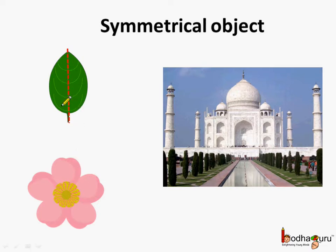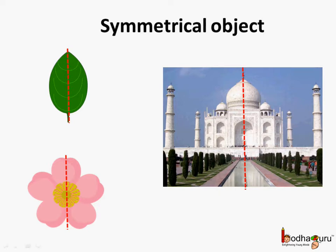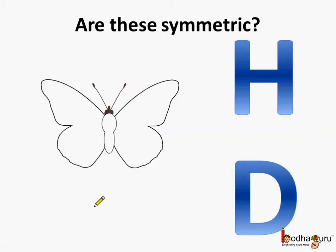Like this line divides the leaf into two identical halves. Same way, here the flower, and here the Taj Mahal is divided into two identical halves. So all of these figures are symmetric.